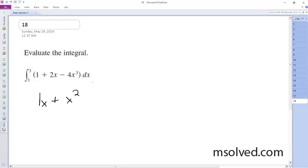minus 4 times x to the 4th divided by 4, which is just x to the 4th. So from 1 to 3.